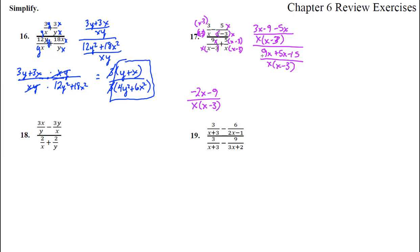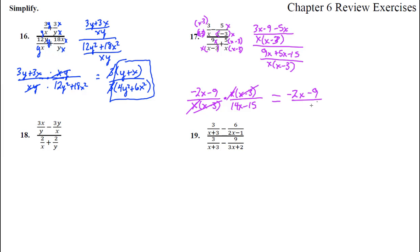We're dividing by the bottom fraction, which is the same as timesing by the bottom fraction's reciprocal — so that's x times x minus 3 over 14x minus 15. Now it's multiplication. We can cancel x times x minus 3, and x minus 3 cancels. Does anything factor so we could cancel? We get negative 2x minus 9 over 14x minus 15.